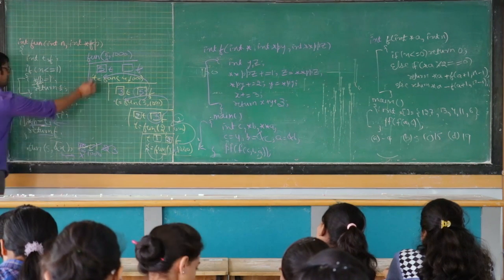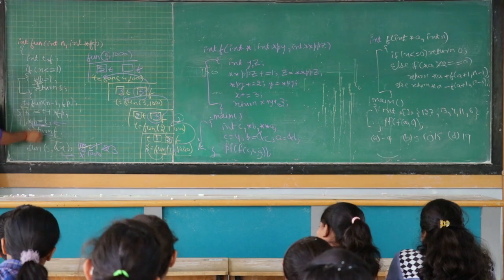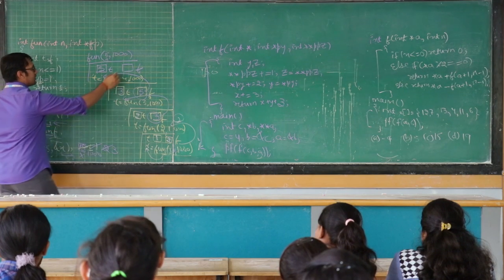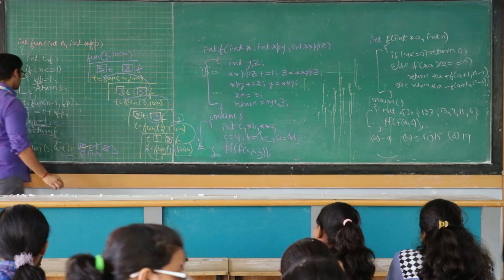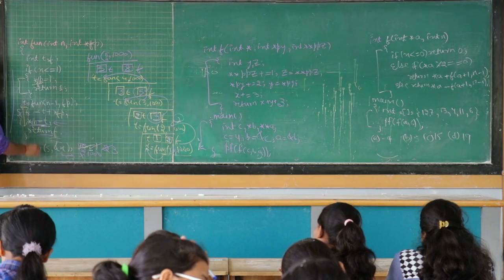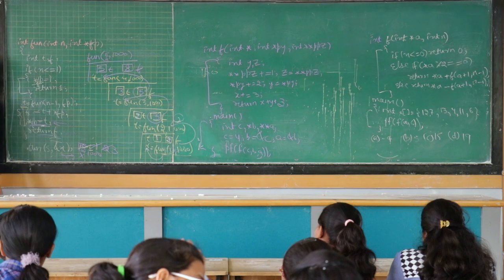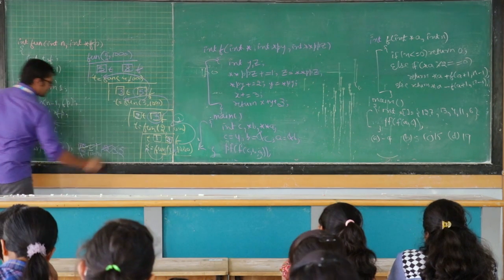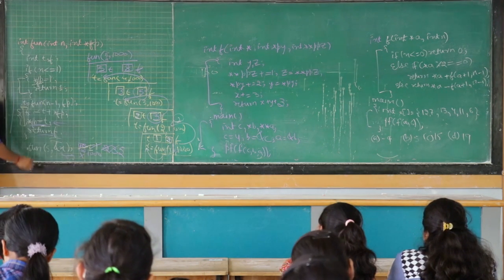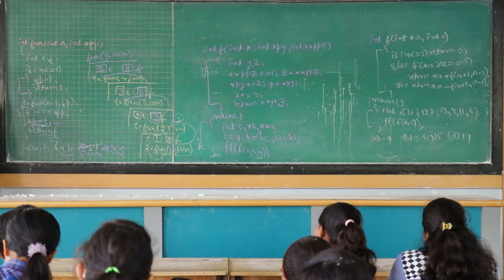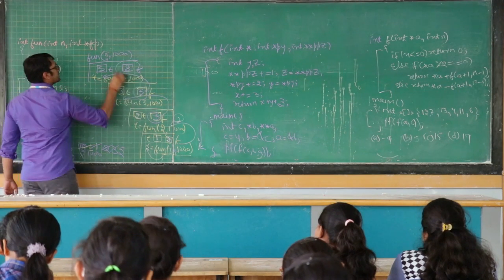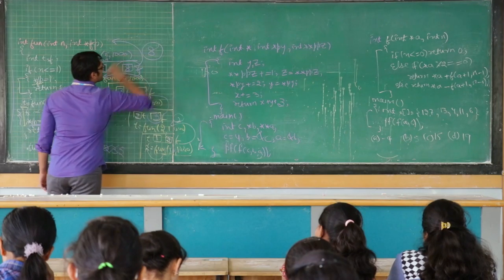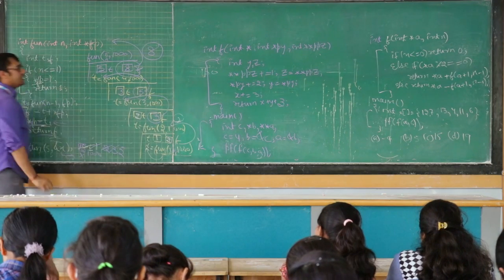Again, it will execute these three statements. f is equal to t plus *fp — *fp is 3, so 3 plus 5 is 8. Then *fp is equal to t, meaning it will store 5. Then return f — value of f is 8. So this program is going to return the value 8. 8 is the answer.